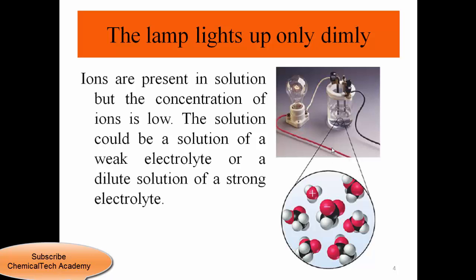For weak electrolytes, we have only a small electrical current, so the lab light lights up only dimly. Ions are present in solution, but the concentration of ions is very low. The solution could be a solution of a weak electrolyte or a dilute solution of a strong electrolyte — both cases produce a small current, meaning the amount of ions in solution is very low.